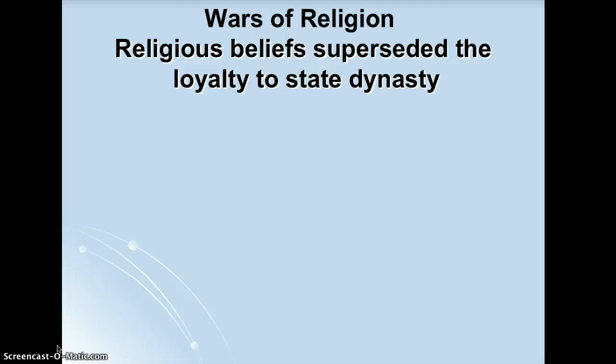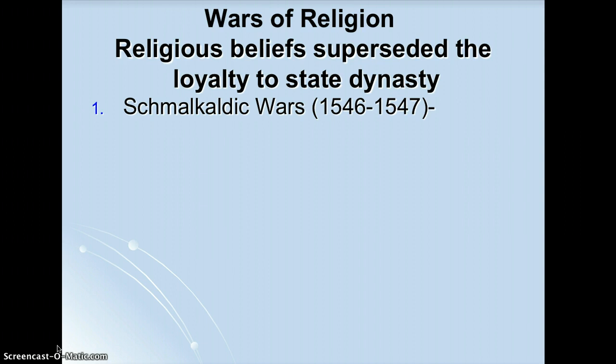Welcome everyone to the Wars of Religion lecture. There are four wars of religion we're going to talk about — three in this chapter and one in chapter fifteen. The first one we've already talked about is the Schmalkaldic Wars. The Protestant princes got together within the Holy Roman Empire to try and defeat Charles and his Catholic army. They formed an alliance with the French King Henry the Second, defeated Charles, and forced him to issue the Peace of Augsburg in 1555, which officially split the church and legalized Lutheranism.